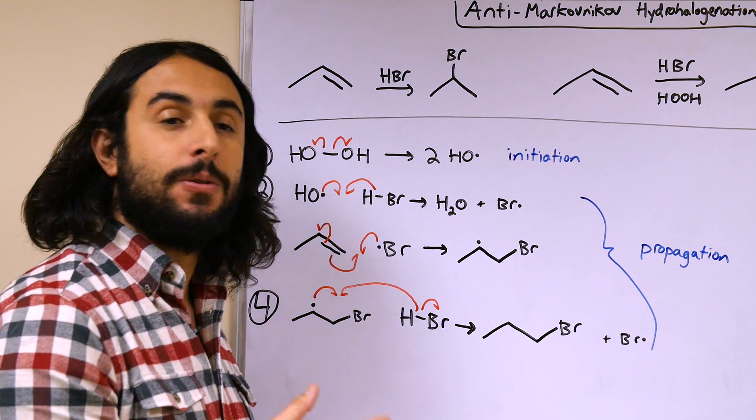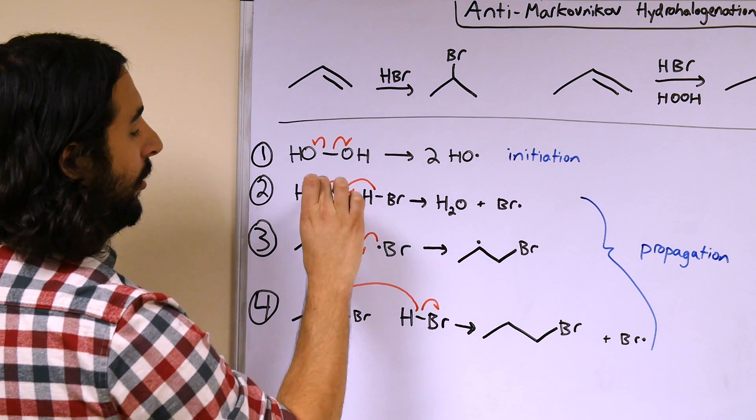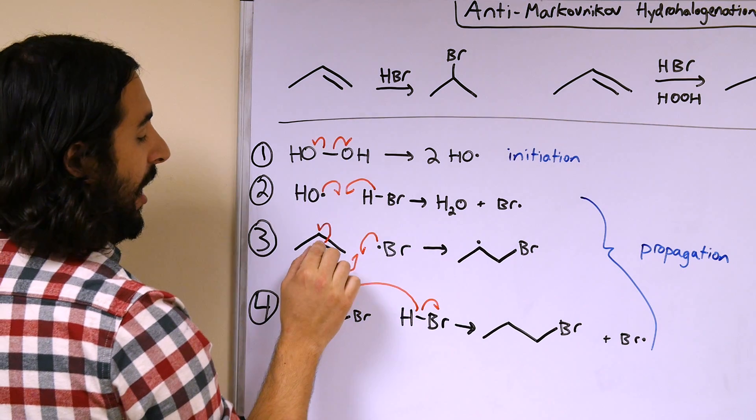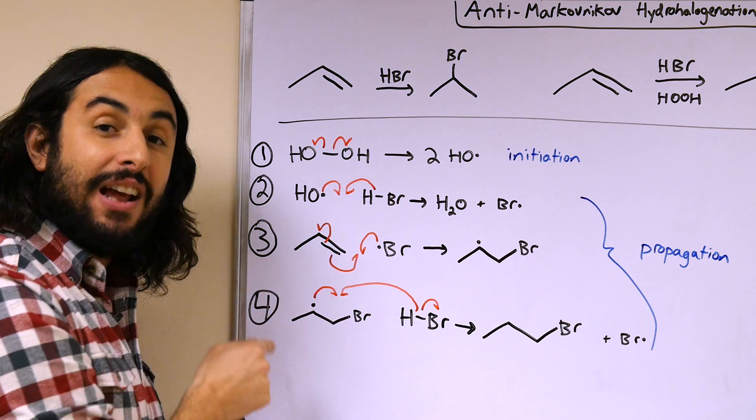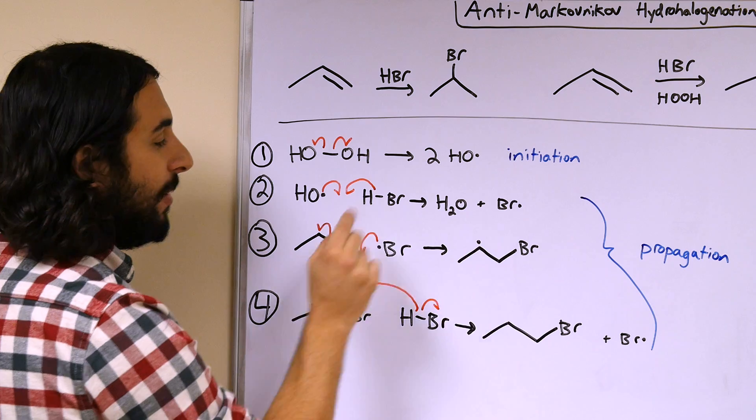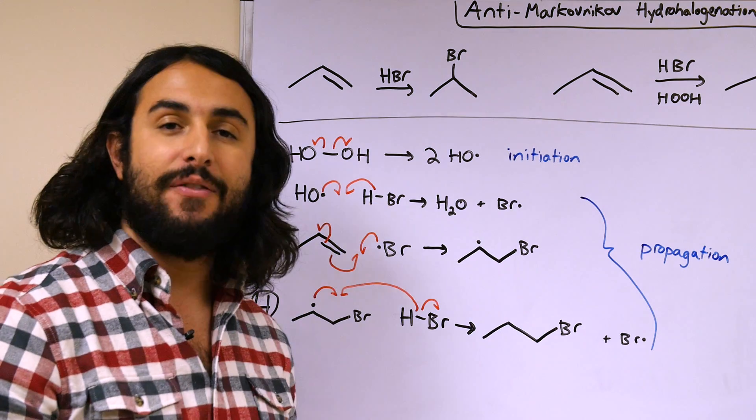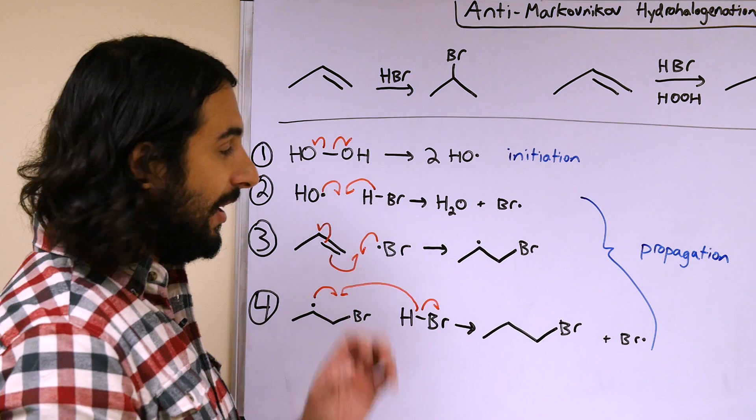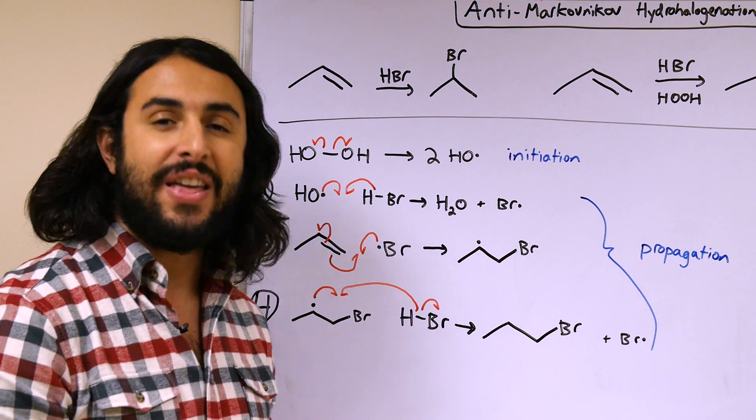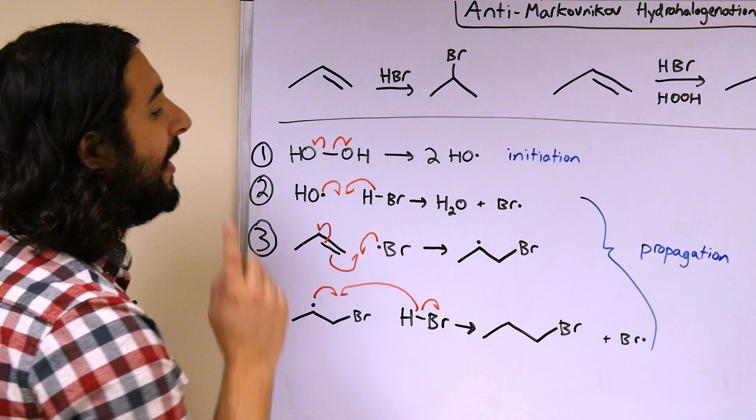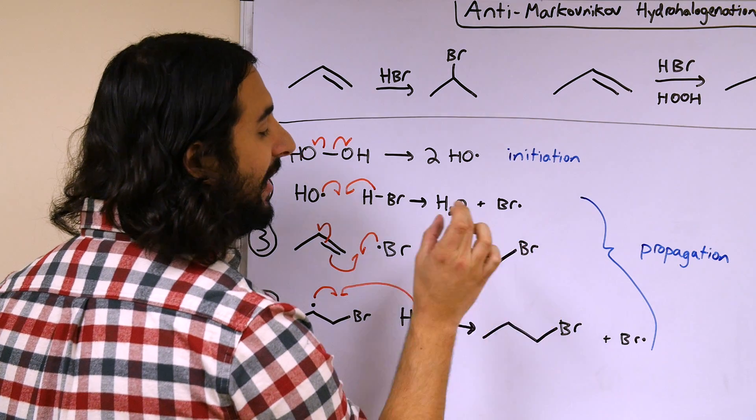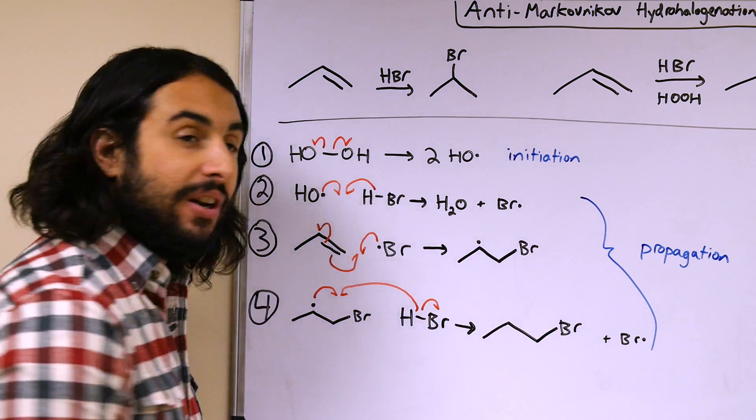If the bromine radical interacted at this position and this pi electron went to form the new carbon-bromine bond there, then that would mean that the other pi electron would be left on the primary carbon and we'd then have a primary alkyl radical intermediate, and that is the less stable of the two. So it will not produce that. So in a regiospecific manner, the bromine will add to the less substituted of the two carbons participating in the pi bond.